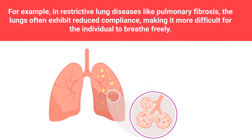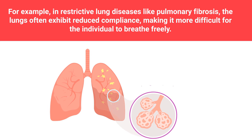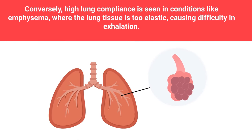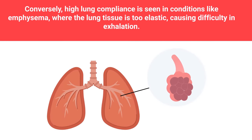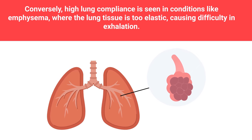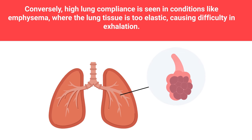For example, in restrictive lung diseases like pulmonary fibrosis, the lungs often exhibit reduced compliance, making it more difficult for the individual to breathe freely. Conversely, high lung compliance is seen in conditions like emphysema, where the lung tissue is too elastic, causing difficulty in exhalation.